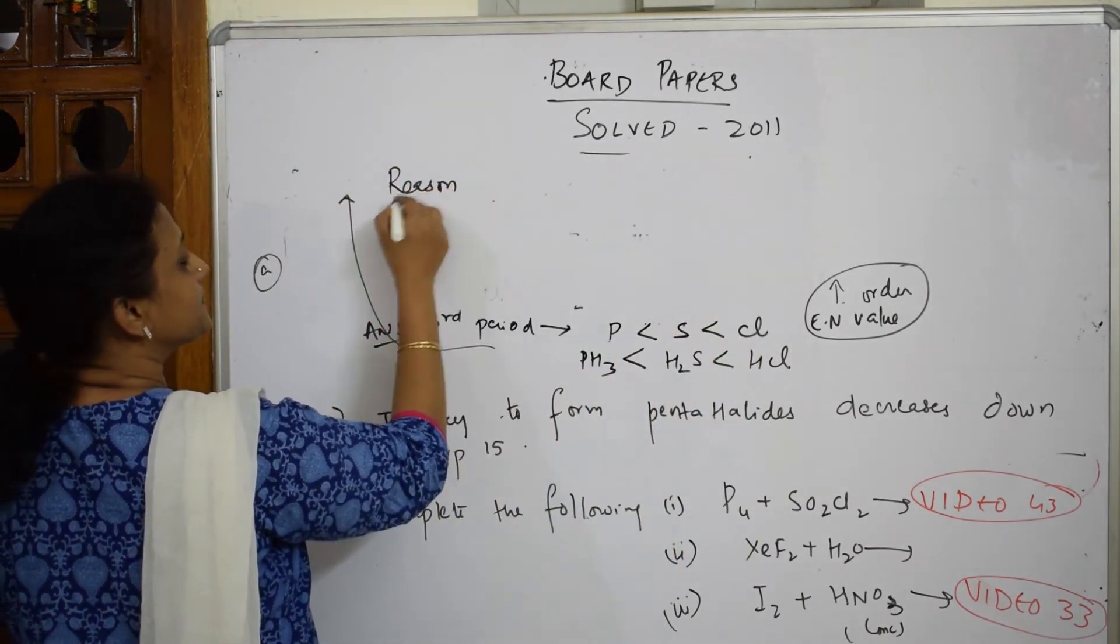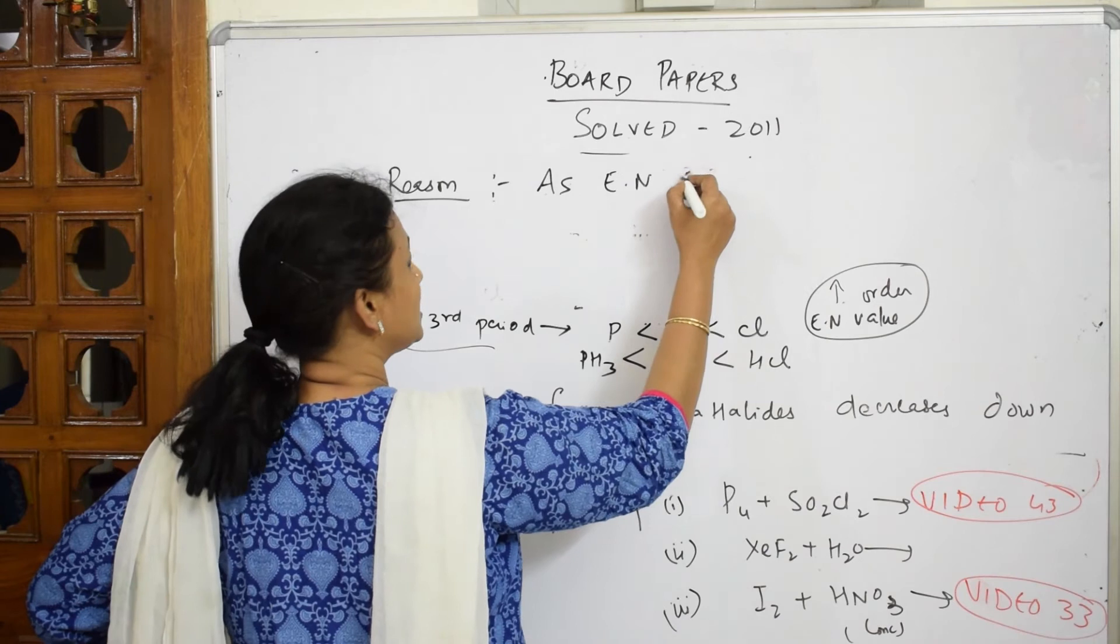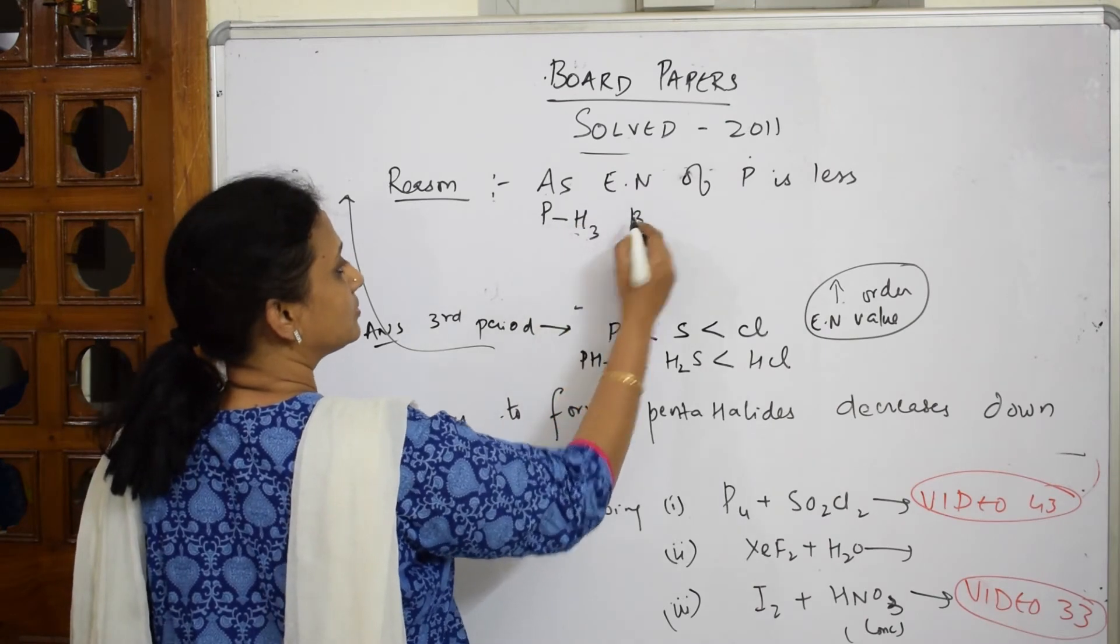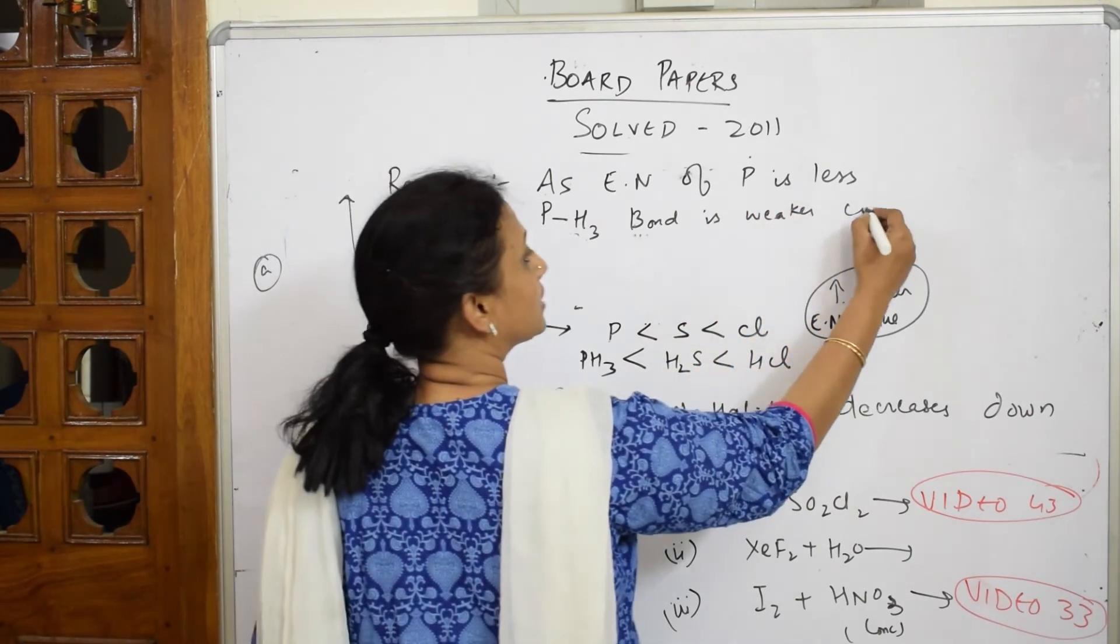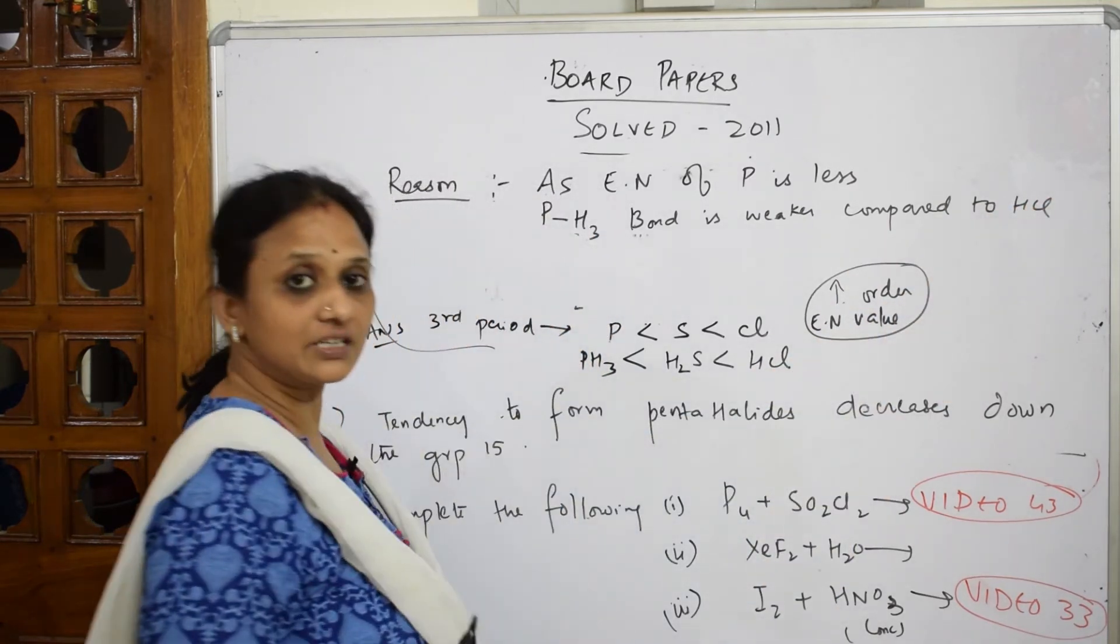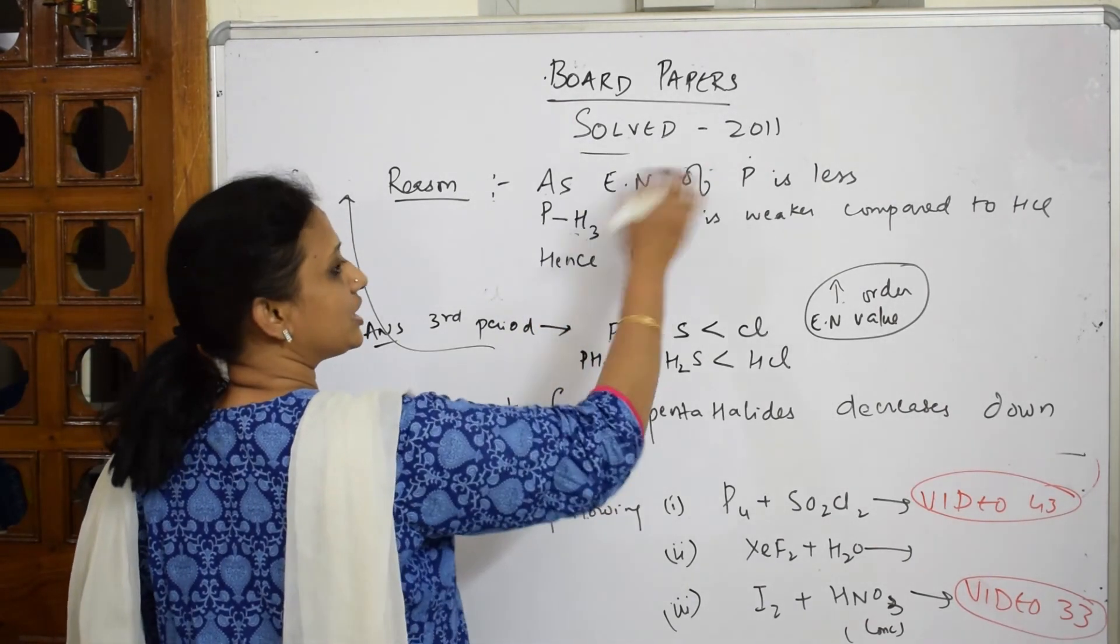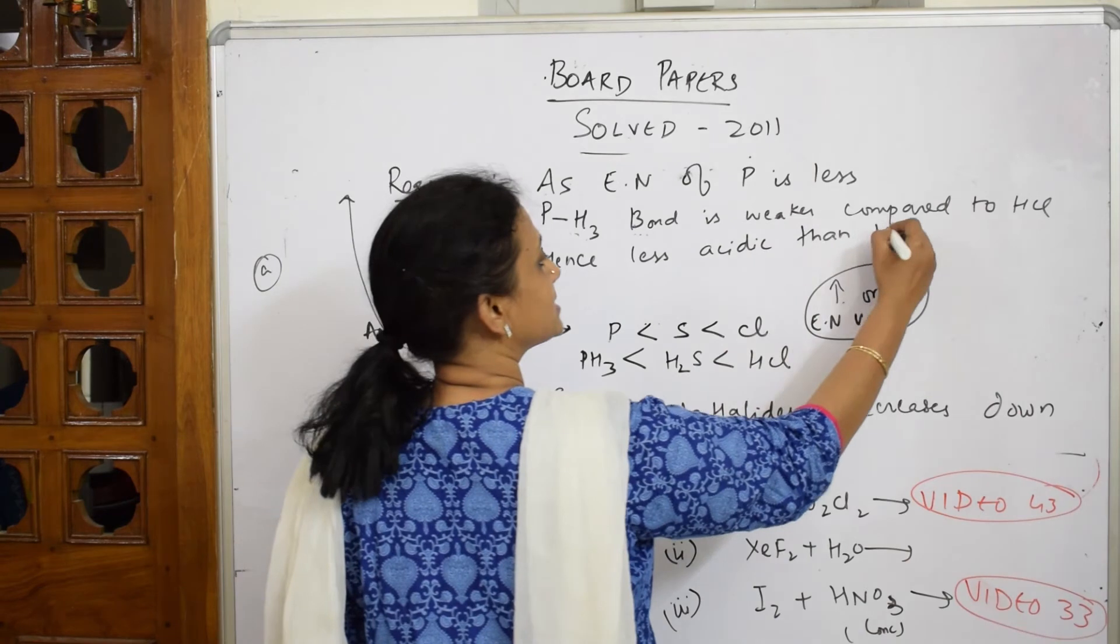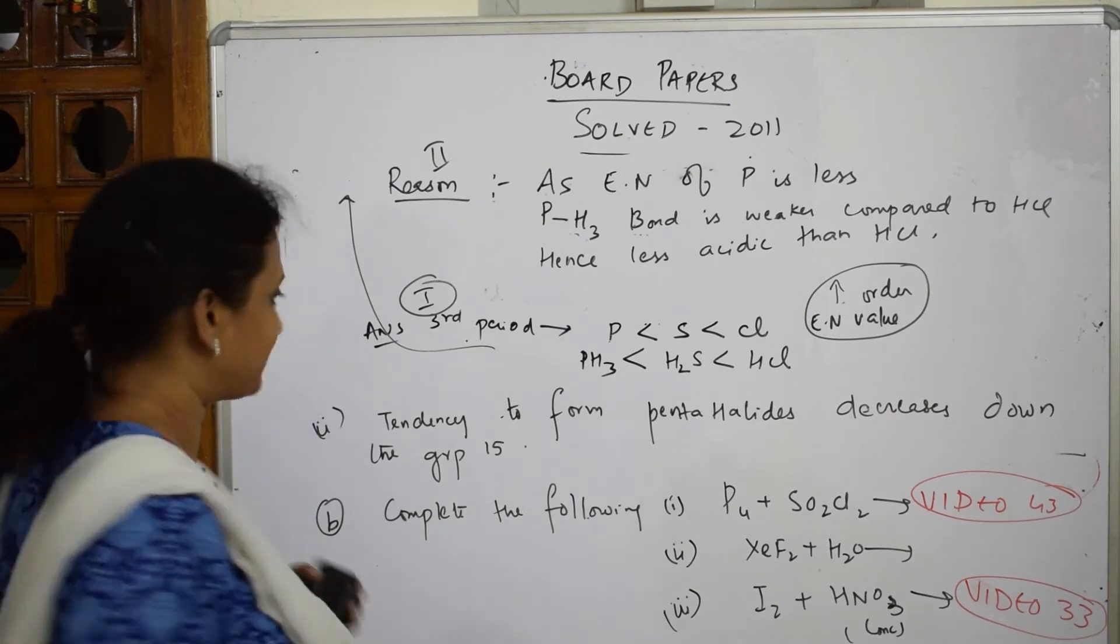In hydrides: PH3 < H2S < HCl. After writing this, write the reason: as electronegativity is less, the PH bond is weaker compared to HCl bond. When the bond is weaker, hence it is less acidic. It can easily donate H+ proton, hence less acidic than HCl. This should be the reason - you get full marks.